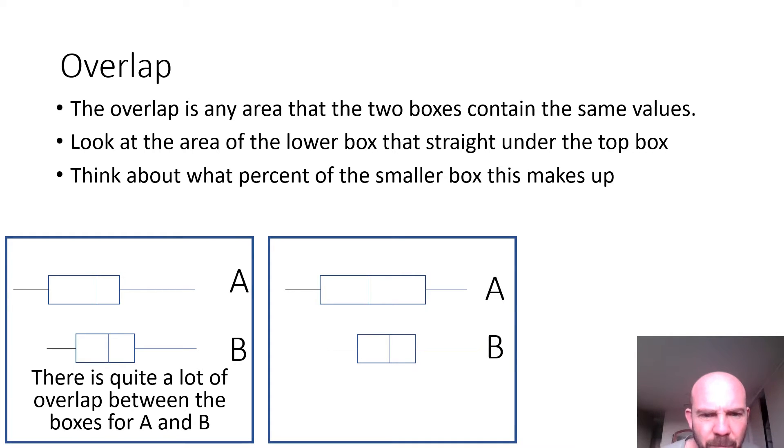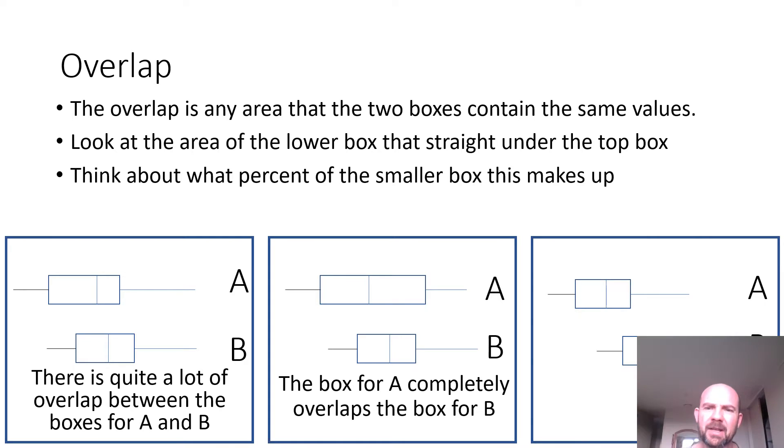Here, B is the smaller one, and 100% of it is underneath A. So we're going to say that it is completely overlapped.